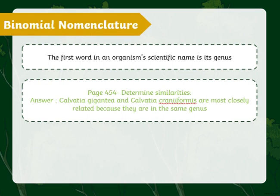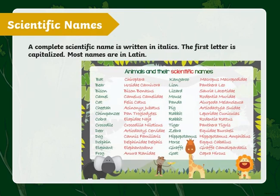It's the genus and species. So we will learn how to name some of these species according to their binomial nomenclature. We will also talk about their scientific names and learn how they are named based on Latin names, and we will search up a few examples of these animals.